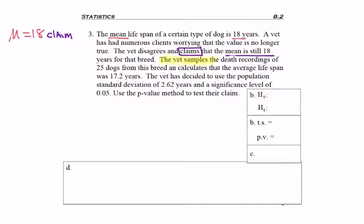Going back. The vet samples the death recordings of 25 dogs, so n equals 25.